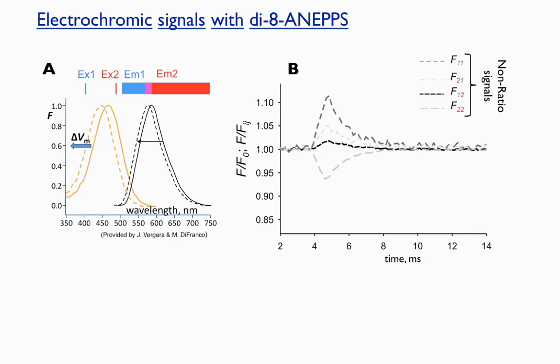Classically, one can ratio the two signals collected in the same emission range with alternate excitation, thus obtaining the excitation ratio signal, F22 over F12 in green here, or by dividing the two signals excited by the same light and collected from two emission ranges, in this case F22 over F21, or emission ratio, shown here in red.